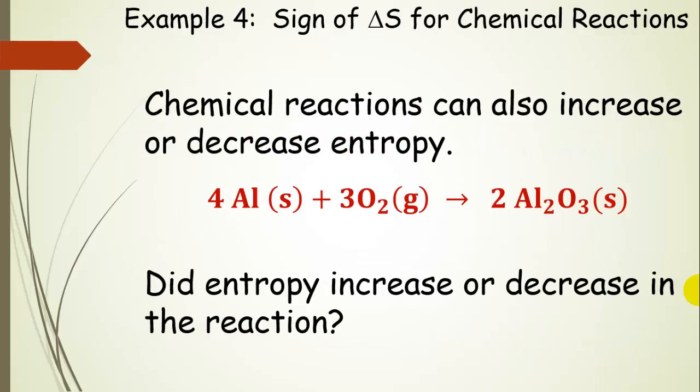What about a chemical reaction? This is a similar type idea. Running a reaction can also either increase or decrease the entropy. So let's take this formation of alumina here. We're going to take aluminum solid, aluminum metal. We're going to react it with oxygen gas to get alumina. And we want to know whether the entropy increased or decreased during the reaction. Here's a little hint: look at the phases of the reactants and products.